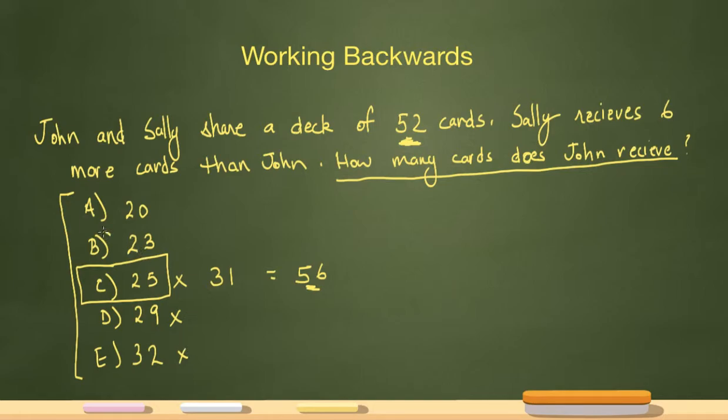Now let's start off by making an assumption that 23 is my answer. So if 23 is my answer, then that's how many cards John has. Then Sally receives six more cards, so that means that Sally must have 29. Now it's 29 plus 23 equals 52.